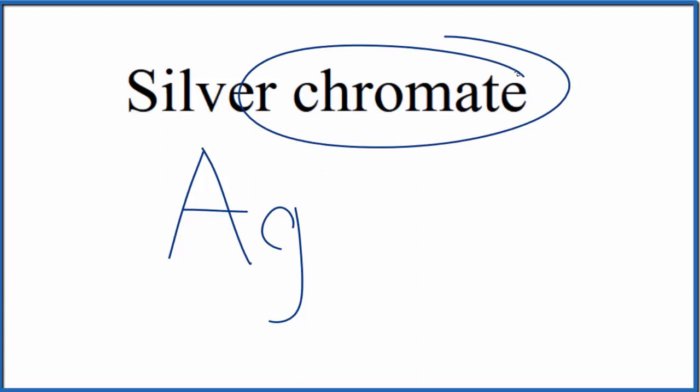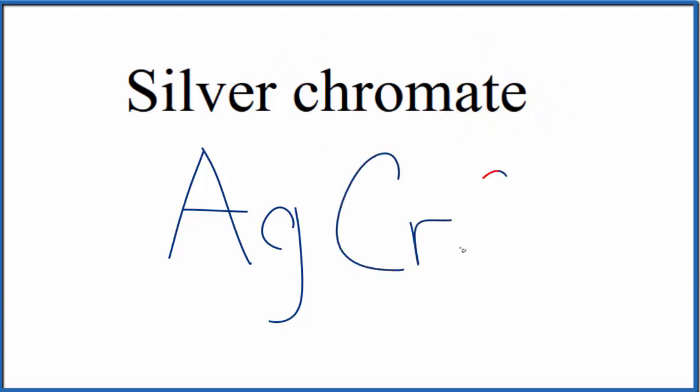Chromate is a polyatomic ion. You can tell because there's this -ate here on the end. So you either memorize that the chromate polyatomic ion is CrO4, and the whole thing has an ionic charge of 2-, or if you're allowed, you look it up on a table of polyatomic ions.